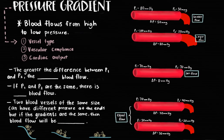The first factor we will discuss is the pressure gradient, which describes how blood will flow from high pressure to low pressure through a blood vessel. The pressure gradient is influenced by three factors: vessel type, vascular compliance, and cardiac output. To better understand how the pressure gradient affects blood flow, let's first consider different scenarios where we have different pressures at each end of a blood vessel.